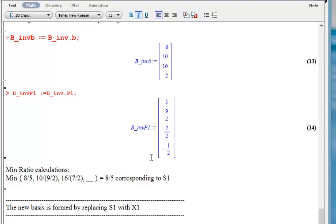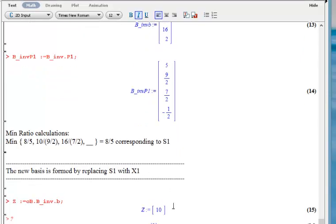8 fifths happened to be the smallest one corresponding to S1. So S1 is going to leave the basis and X1 is going to replace that. Because we are not at the optimal solution, we don't need to do the calculation for Z, but the formula and calculation exists here.